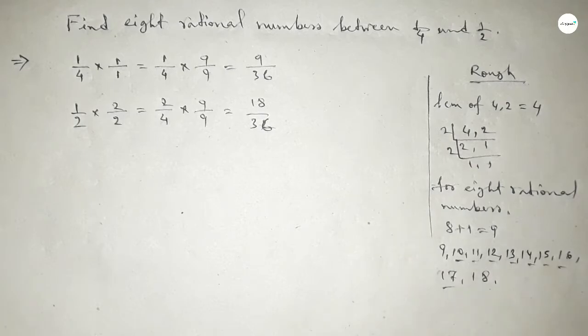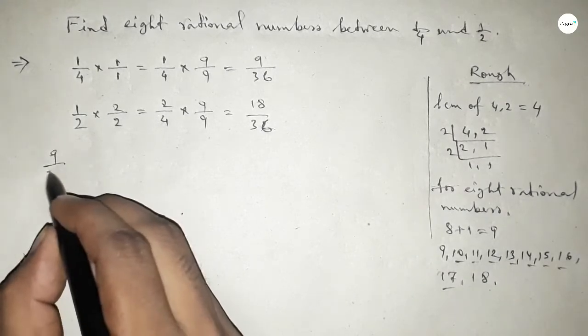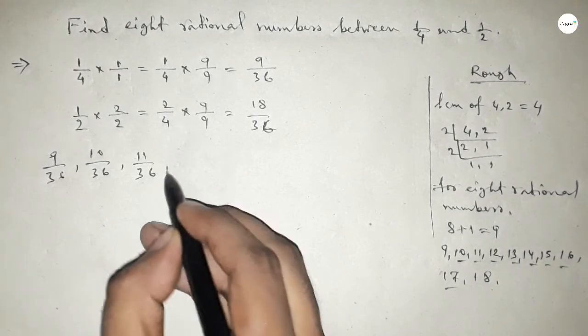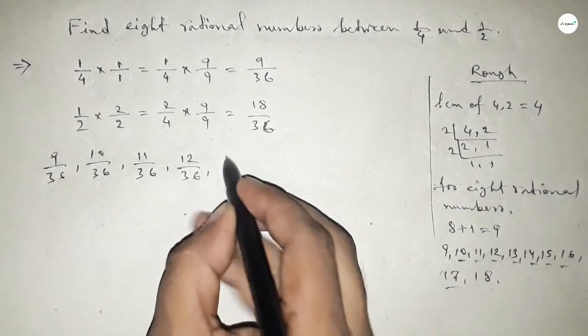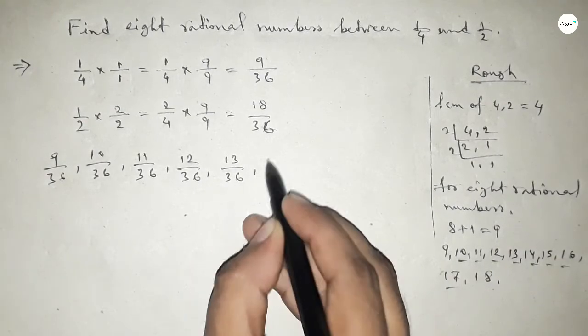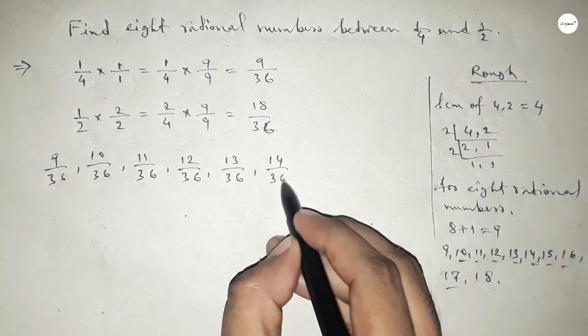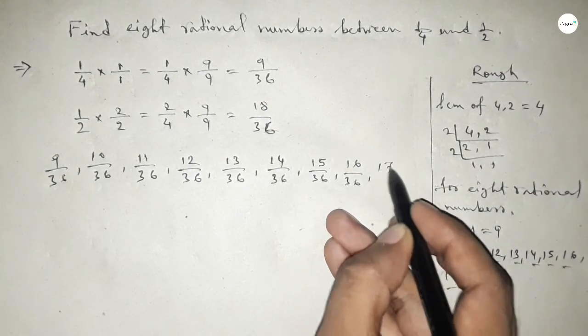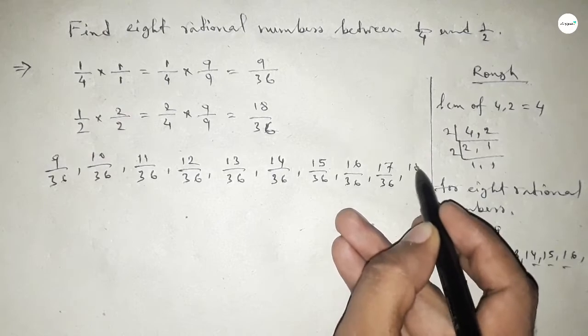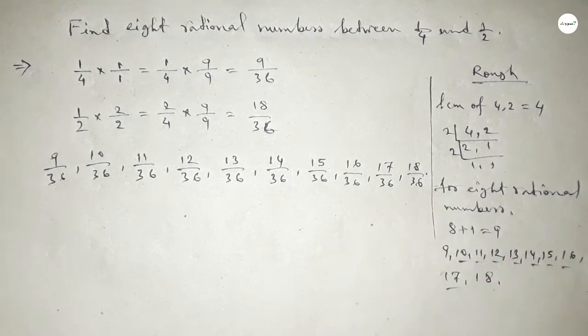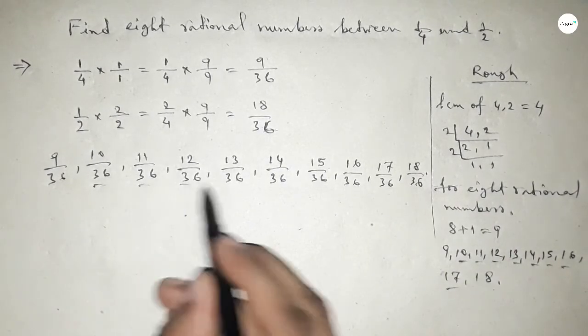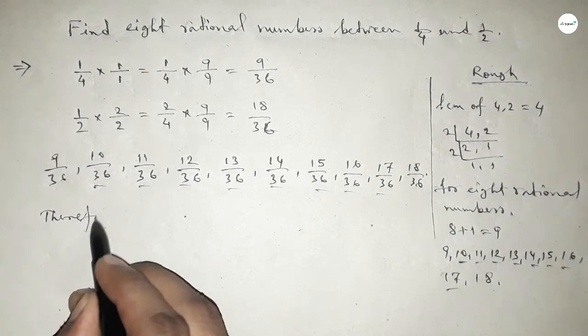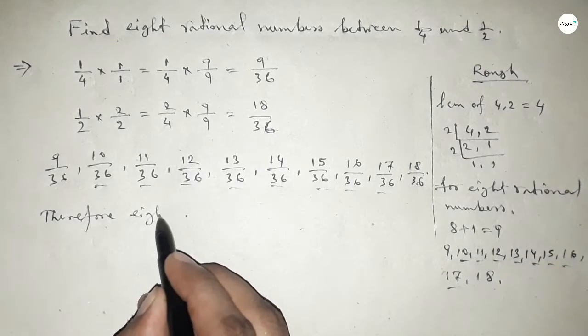So here all the rational numbers are: first one 9 over 36, 10 over 36, 11 over 36, 12 over 36, 13 over 36, 14 over 36, 15 over 36, 16 over 36, 17 over 36, and last one 18 over 36. Among these, these are the required 8 rational numbers between 1 over 4 and 1 over 2.